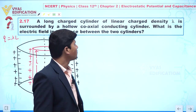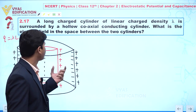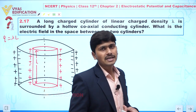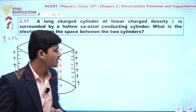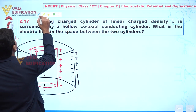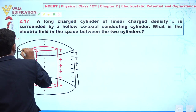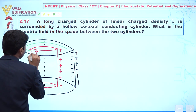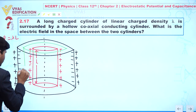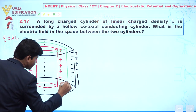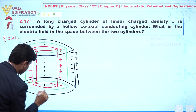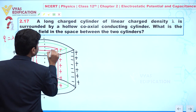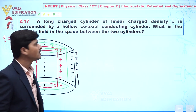Our objective is to find the electric field in the space between the two cylinders. To calculate the electric field, we draw a Gaussian surface between the two cylinders. Let us suppose this Gaussian surface has radius R.